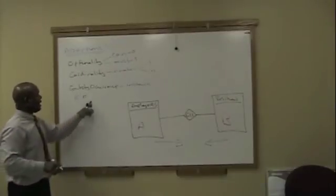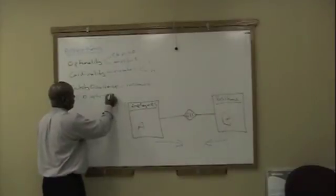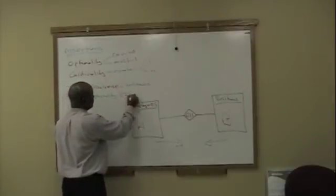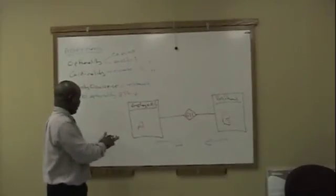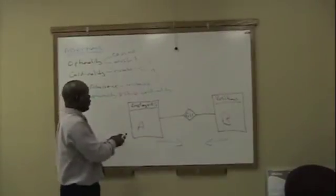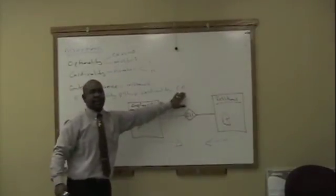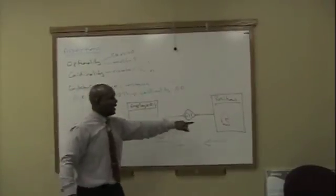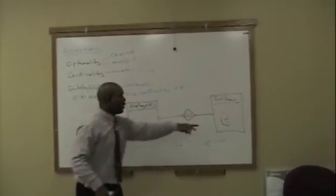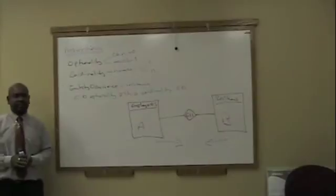So you start off with the entity occurrence — I'll put that in shorthand. Then you have the optionality, then the relationship, then the cardinality, and then you have the entity occurrence once again. But this first entity occurrence and the last are different: there's entity A and entity B. When looking at it in this way, you start with entity A and end with entity B. When looking the other way, you start with entity B and end with entity A.